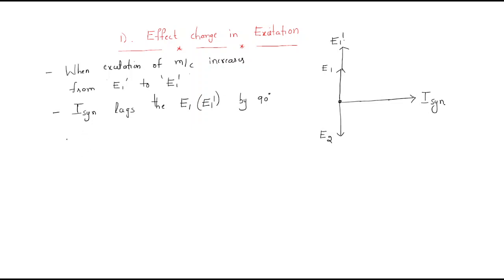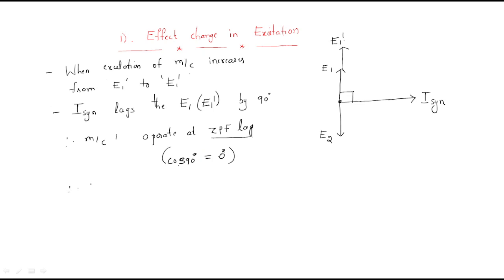Just look at machine one — machine one operates at zero power factor lagging. That means cos 90 degrees. Zero power factor lagging means if the alternator is operated at lagging power factor, then purely demagnetization will be done. So machine one is purely demagnetized, meaning that machine will lose its reactive power.